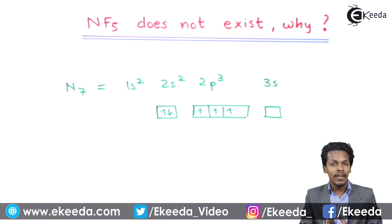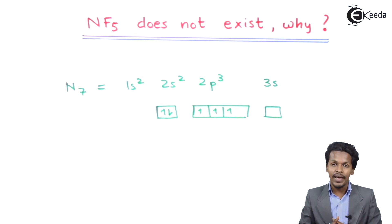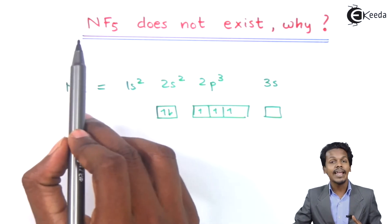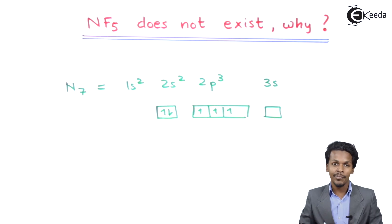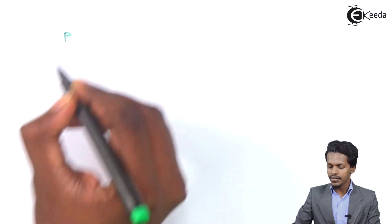Now let's compare this with the formation of PF5. Let me elaborate why PF5 exists but NF5 does not exist. Let's understand this by looking at the electronic configuration of phosphorus.